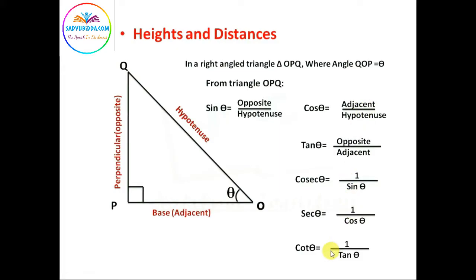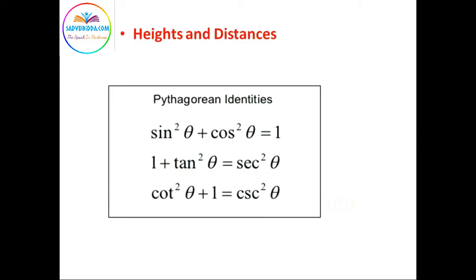Cotangent theta is inverse of tan theta. To solve basic problems in trigonometry, we must know the basic trigonometric identities. Sine square theta plus cos square theta equals one, and one plus tan square theta equals secant square theta.